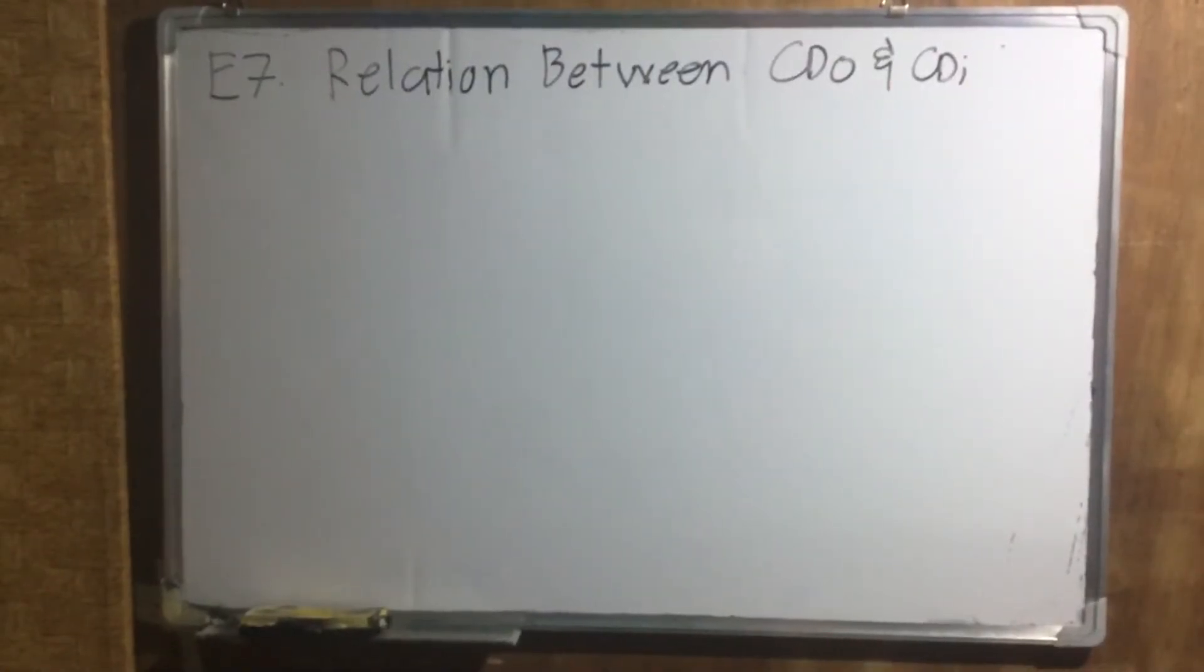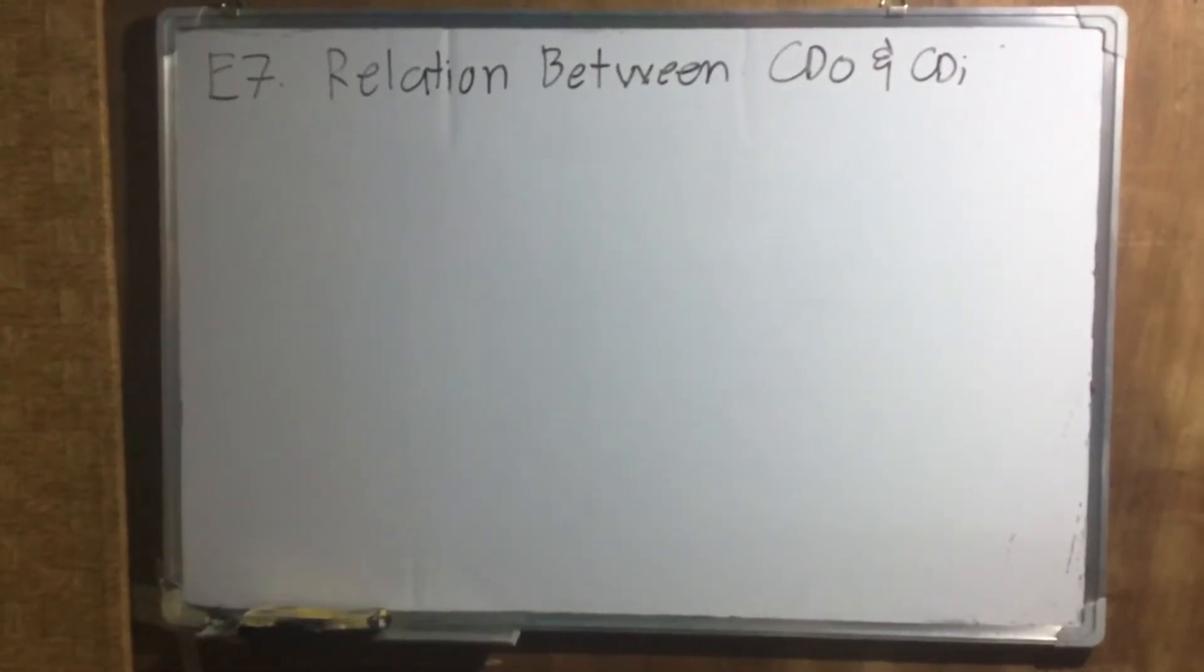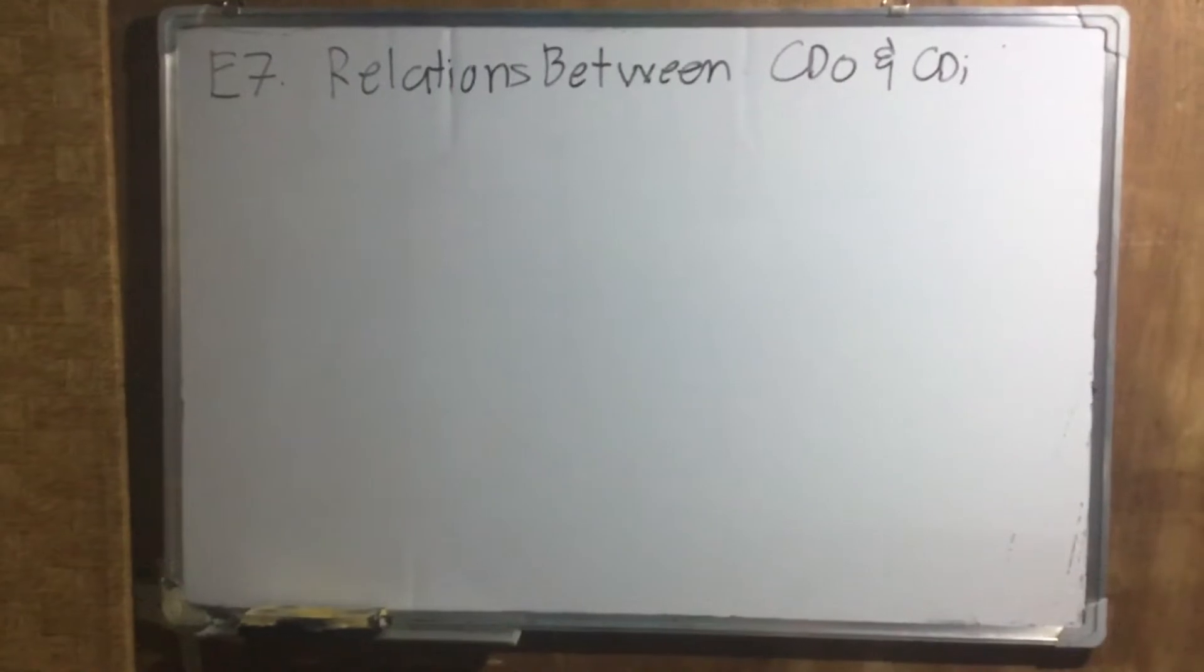Welcome to our airplane performance series, episode 7, relations between CDO and CDI. In the previous episodes, we have observed that various aspects of performance of different types of airplane depends on the aerodynamic ratios.